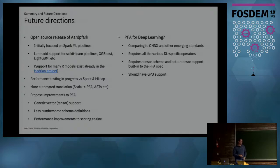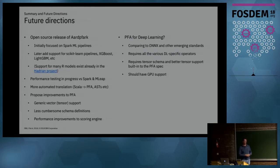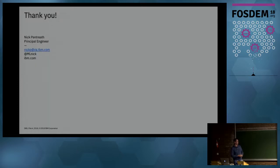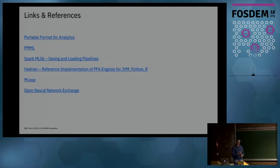There are also gaps in the PFA standard itself — one of the main ones is support for generic tensors or vectors, and performance improvements to the scoring engine. We're also looking at whether PFA can be used for deep learning, which would require a generic tensor schema, GPU operators, and deep learning-specific operators to be built in. That's what we're working on. Thanks very much — there are some links and references in the slides online.